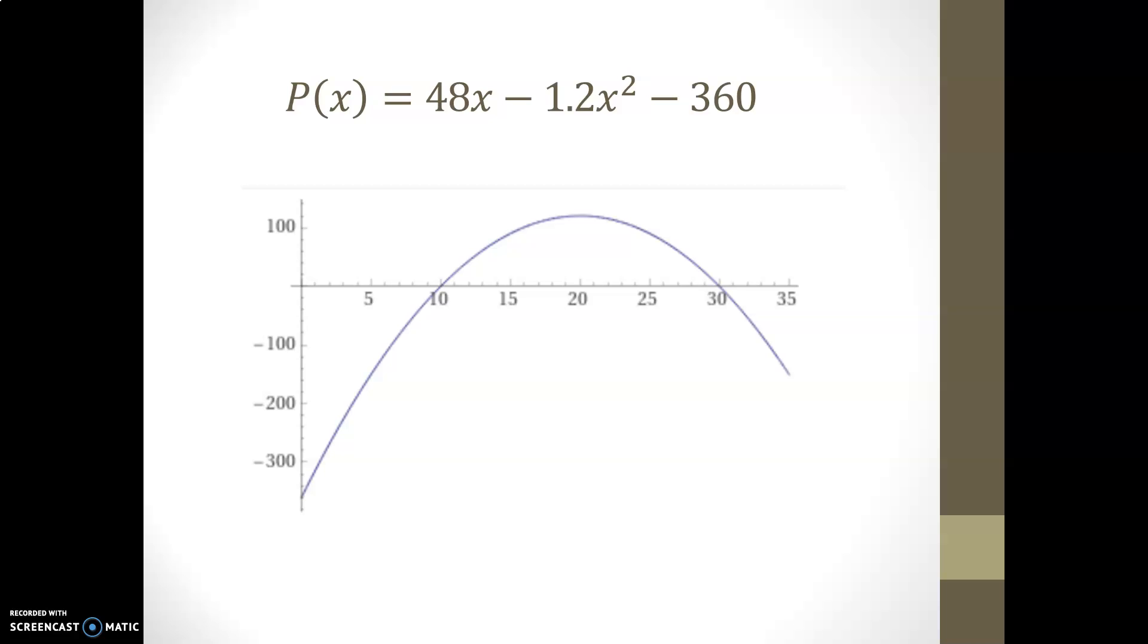Here is a graph of the profit function that we find, and notice how this graph crosses the x-axis when x is 10. It will reach a maximum profit when x is 20, and because costs will then become more important than revenues, the profit will eventually decrease and not be profitable.